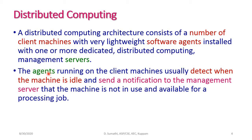The agent runs on the client machines and detects when the machine is idle. The purpose of the software agent is to detect when the machine is idle and immediately send a notification to the management server that the machine is not in use and is available for further processing. If the machine is idle, we can immediately assign a job to that particular machine.